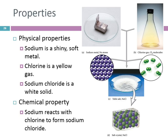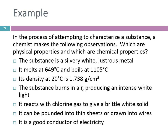So here's an example of physical properties. A chemist is trying to characterize a substance and makes these observations — let's identify them as chemical or physical. First: the substance is a silvery white lustrous metal. Physical — we can observe that without changing the substance at all. It melts at 649°C and boils at 1105°C. Physical. Any time we're looking at a state change — melting, freezing, boiling, condensing, subliming, depositing — that is a physical property.